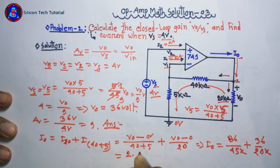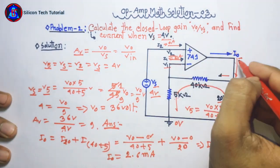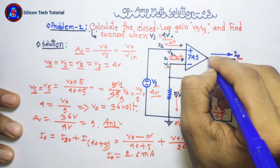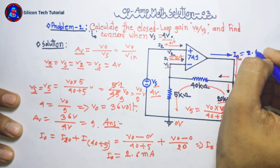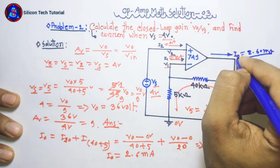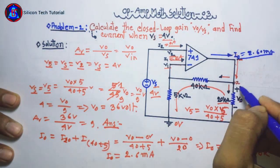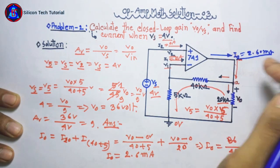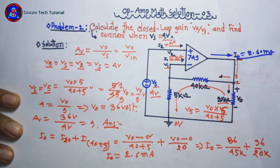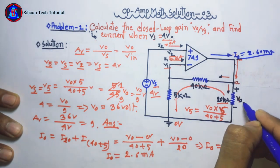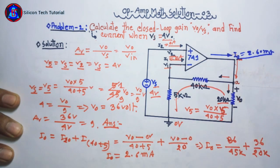36 by 45 plus 36 by 20 gives 2.6 mA. The branch current is 2.6 mA, and this branch current is transferred from A branch to RLL and then transferred back to A branch.